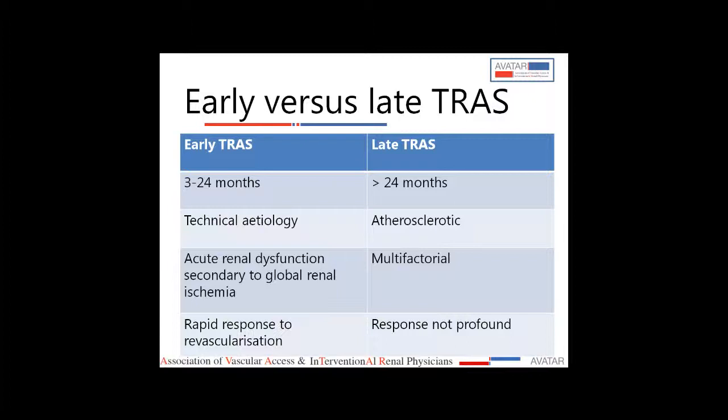There are two entities: early TRAS and late TRAS. Early TRAS occurs between 3 to 24 months post-transplant, is usually secondary to surgical etiology, and presents with acute renal dysfunction secondary to global renal ischemia. Because there are no other confounding factors, the response to revascularization is prompt and rapid. Late TRAS, occurring after 24 months, is predominantly atherosclerotic with multifactorial etiology, and commonly associated parenchymal pathologies complicate renal dysfunction. Therefore, the response to revascularization is not very profound in late TRAS.